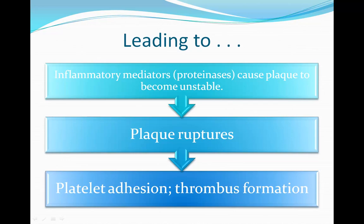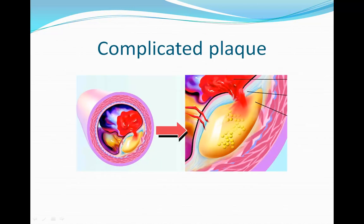Furthermore, inflammatory mediators cause plaque to become unstable. This leads to plaque rupturing. When plaque ruptures, it is known as complicated plaque. Platelet adhesion and thrombus formation are very likely to happen in complicated plaque. Here we can see a picture where the plaque is ruptured and a thrombus is formed.